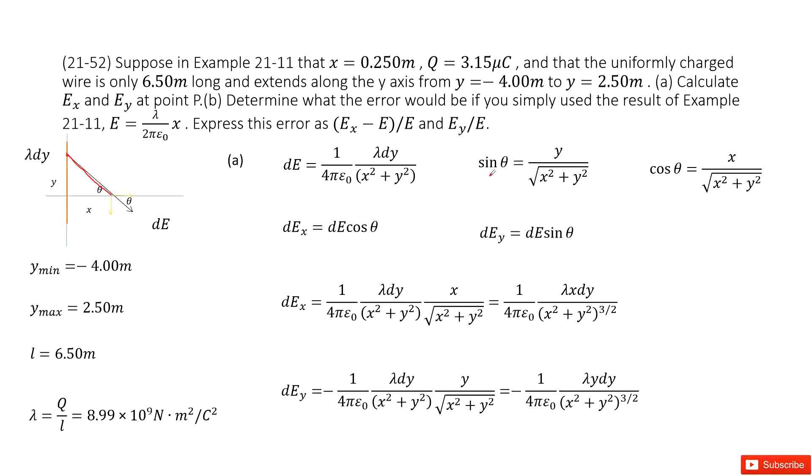We can also find sine θ and cosine θ in this triangle. Sine θ is y over the side length. We write it there. Then we input dE and sine θ or cosine θ into dEx and dEy. We get these two equations, which can be simplified to these two terms.